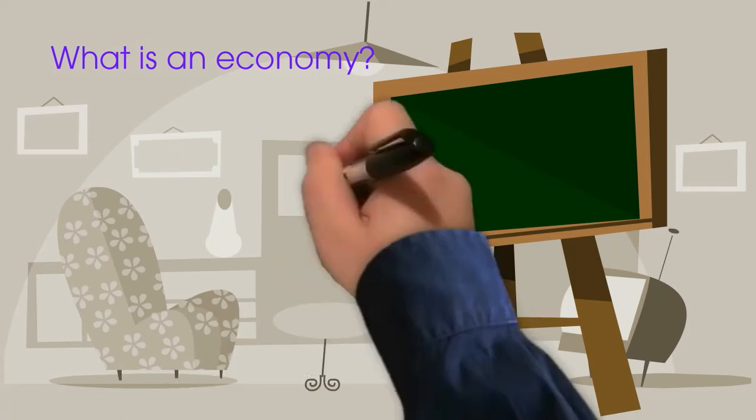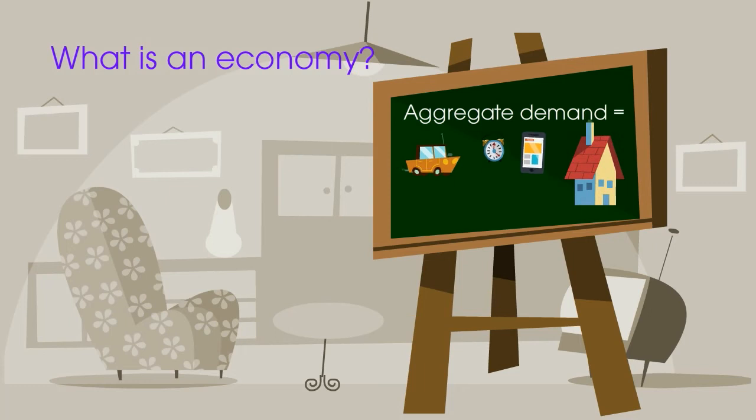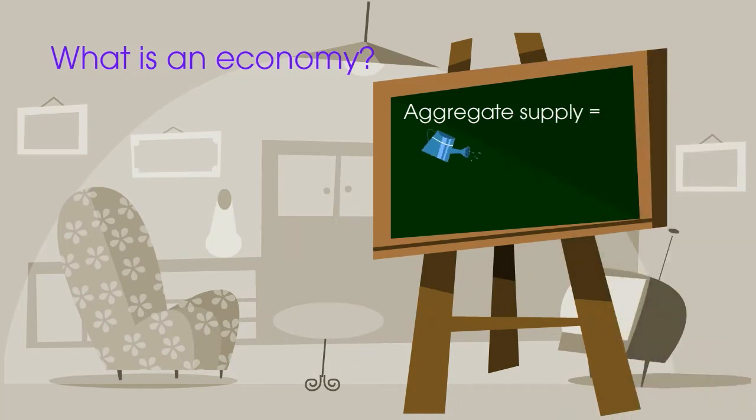Demand for all different goods and services, all of those goods and services added together, is known as aggregate demand. The amount of goods and services produced by all firms in the economy is known as aggregate supply. If we are studying an economy, we're looking at aggregate demand and aggregate supply.